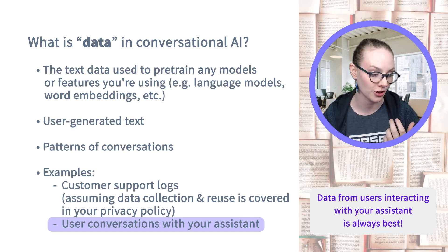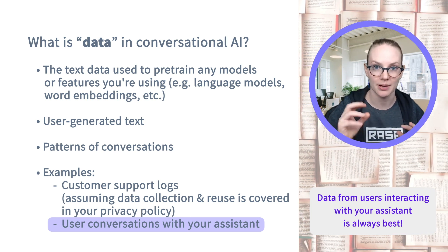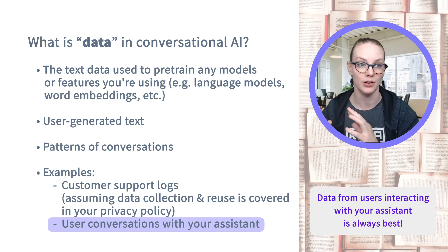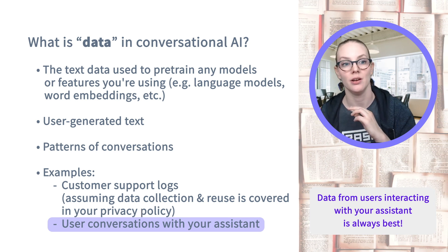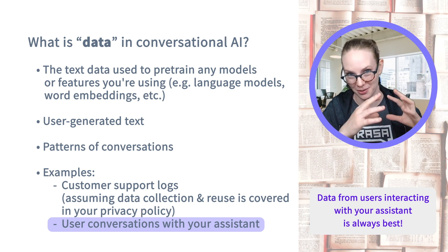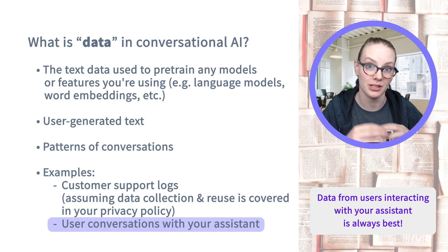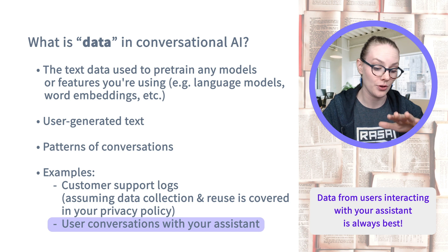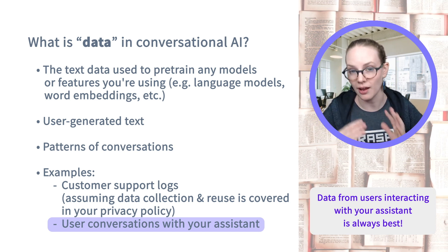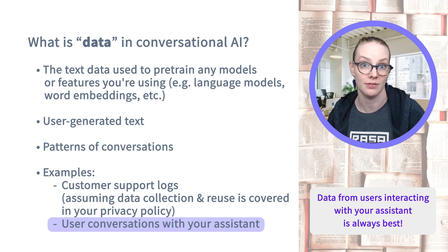You can think about it in terms of statistics: if you have a population you're trying to model and you might sample some data from that population, you have access to the data of people actually interacting with your model, and that's what you're trying to model. You're trying to model the sorts of things that people say to you when they talk to your assistant and help to actually handle those interactions well.